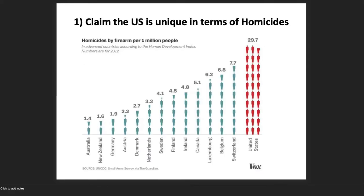One of the common things you'll see — I'll show you some graphs from the New York Times and from Vox — is homicide rates by firearms per 100,000 or a million people. This graph here is from Vox. It shows like 14 countries where the United States has a lot more homicides from firearms than other countries do.